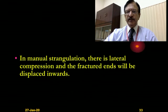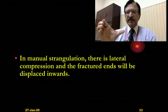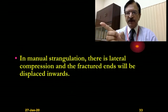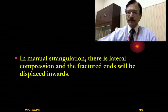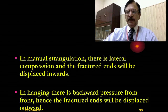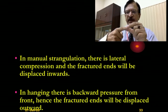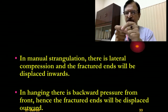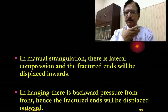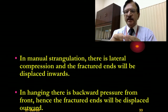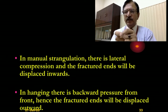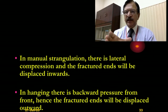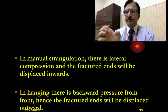In manual strangulation, there is lateral compression and the fractured ends are displaced inwards. In hanging, the pressure is from the front and backward, so the fractured ends of the greater cornu are displaced outwards, pressed against the posterior pharyngeal wall. Therefore, in hanging the fractured ends are displaced outward, whereas in manual throttling they are displaced inward.